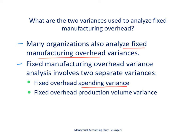Fixed overhead costs are things related to the factory — for example, the rent on the factory or insurance related to the factory. The spending variance looks at whether we spent more or less than expected on those types of items. Then we have a second variance: the fixed overhead production volume variance, which has to do with whether we produced more product than we expected to produce. We will talk about that in more detail in just a second.